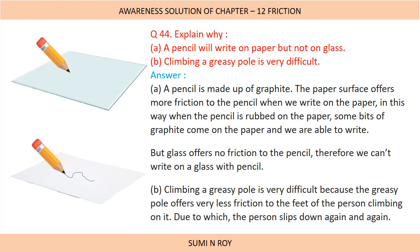Next question: Explain why a pencil will write on paper but not on glass. A pencil is made of graphite. The paper surface offers more resistance — more friction — to the pencil. When the pencil is rubbed on paper, some bits of graphite come onto the paper and we are able to write. Whereas glass offers no friction to the pencil, therefore we cannot write on glass with a pencil, because glass is a smooth surface and on a smooth surface friction is very less.